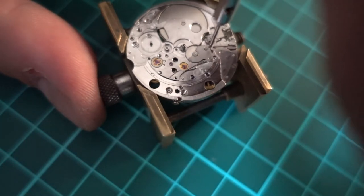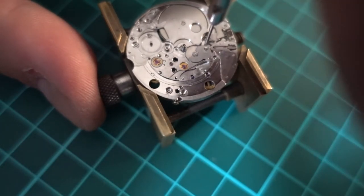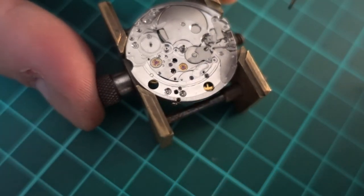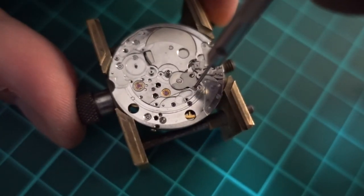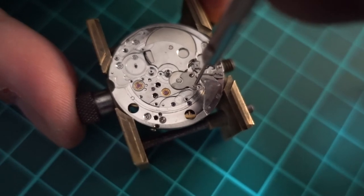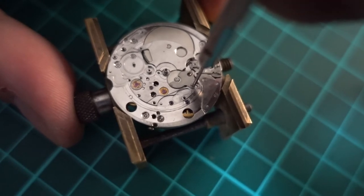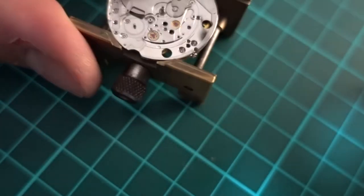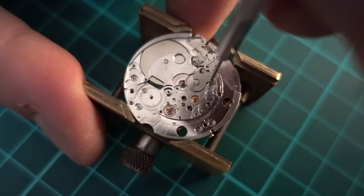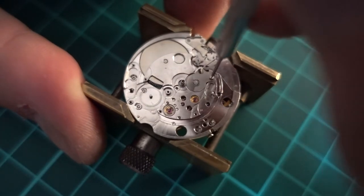So now we're just moving over onto the Keyless Works. I'm just removing the cover plate for the setting wheel there. It's got a fairly conventional Keyless Works. You can see there as well, despite being a reasonably high jeweled watch, they've only put in shock protection on the escape wheel and also the balance wheel. Which is pretty standard I guess, probably all it really needs.